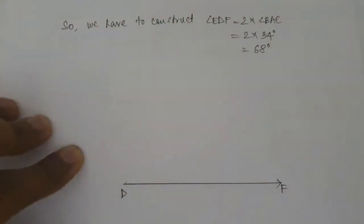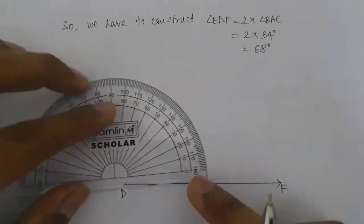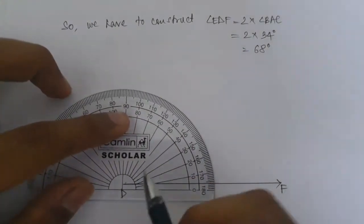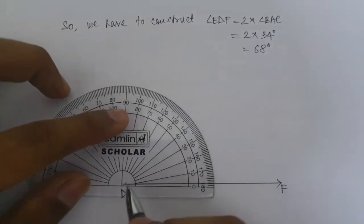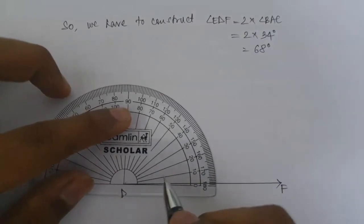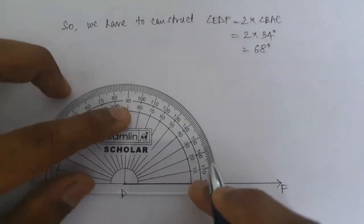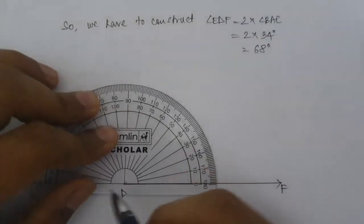And now using a protractor we again match the edges, edge with the line on the protractor and our point D with the point on the protractor. Now we have to make an angle of 68 degrees.